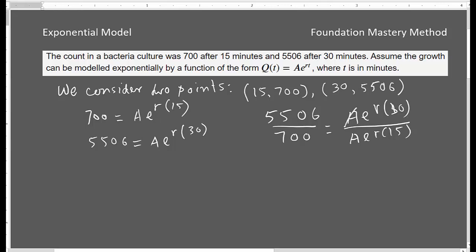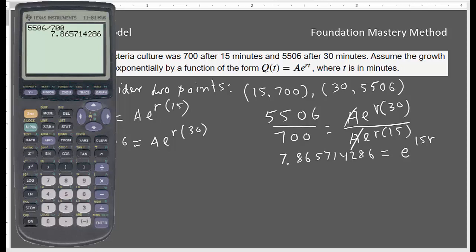Now I can cancel A from here and then you can just take your calculator and simplify. When we divide 5506 by 700, my answer is 7.865714286. I'm taking all of them, I'm not rounding. Now you need to find r from here. So I show you how to do this one in the calculator.